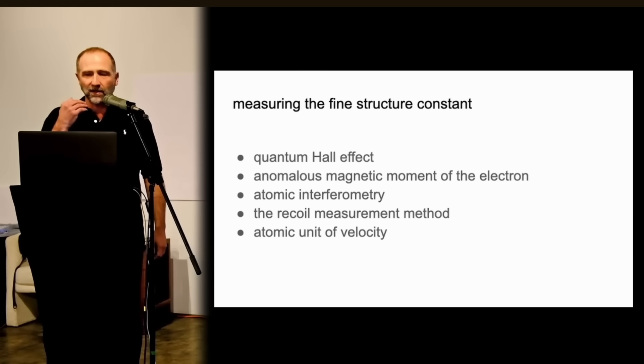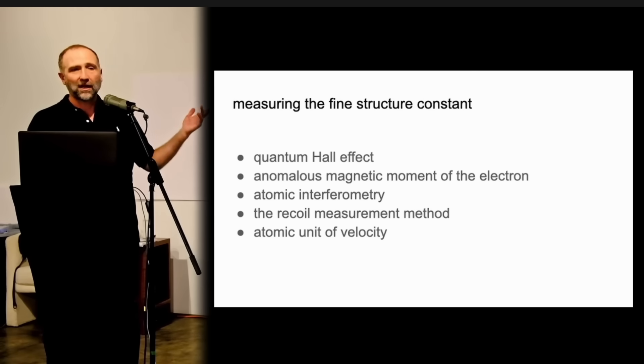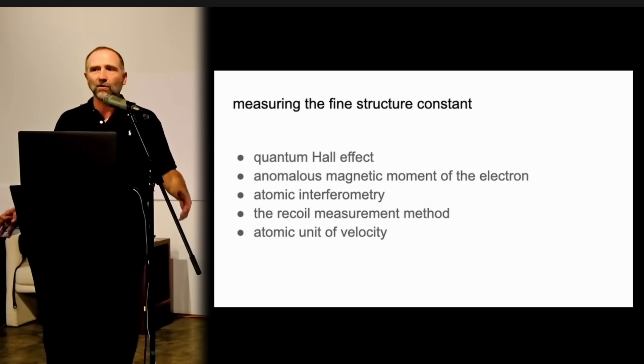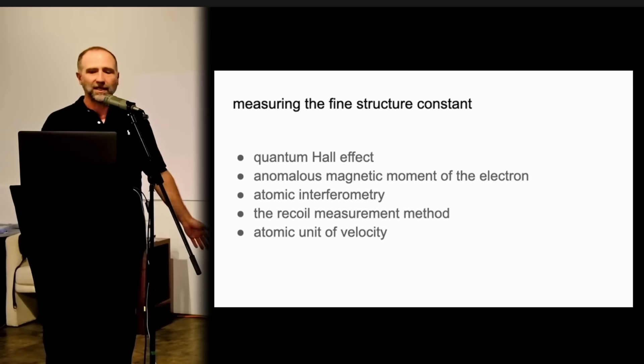Now, it's found in many places in the constants of nature, but you can measure it using the quantum Hall effect or the anomalous magnetic moment of the electron. You can use atomic interferometry or the recoil measurement method. You can also use it from the atomic unit of velocity. There's many, many more. I think it's probably over a hundred. So there's many relationships that it indirectly comes from.